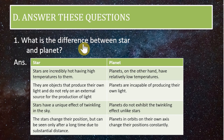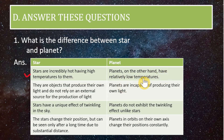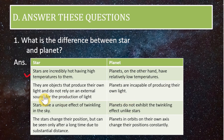Now the long answers. First: what is the difference between a star and a planet? Stars are incredibly hot, having high temperatures, whereas planets have relatively low temperatures. Stars produce their own light and do not rely on external sources, whereas planets are incapable of producing their own light. Stars have a unique twinkling effect in the sky, whereas planets do not exhibit the twinkling effect.